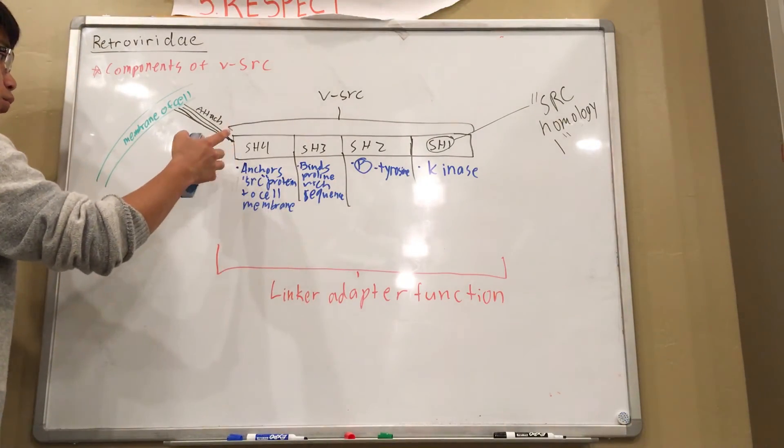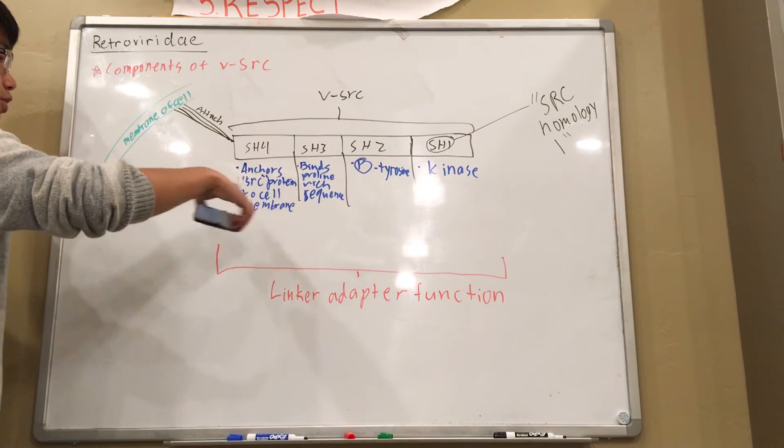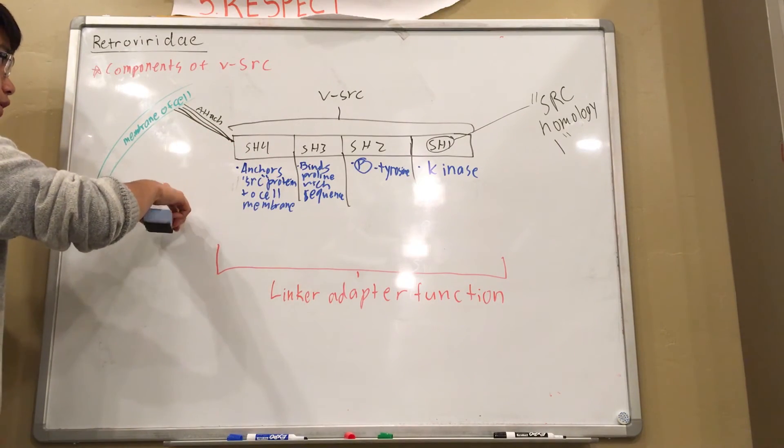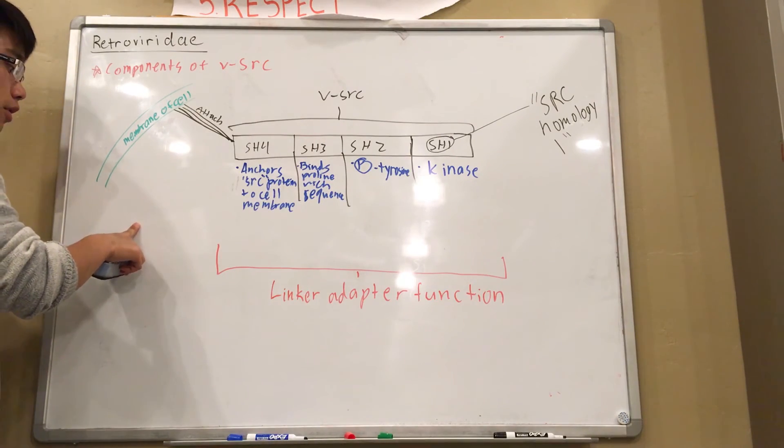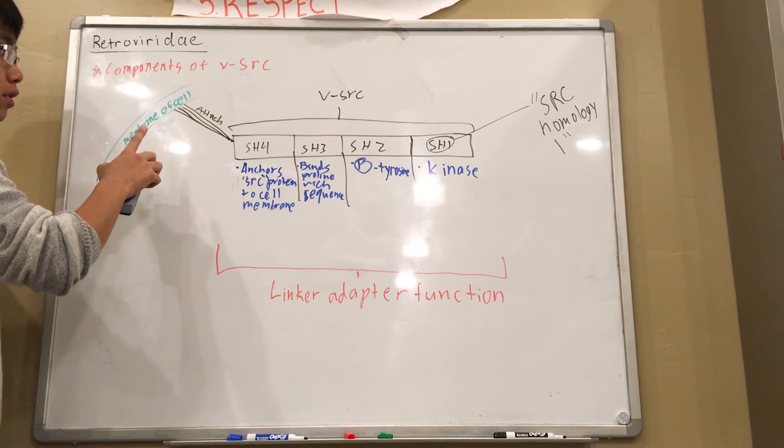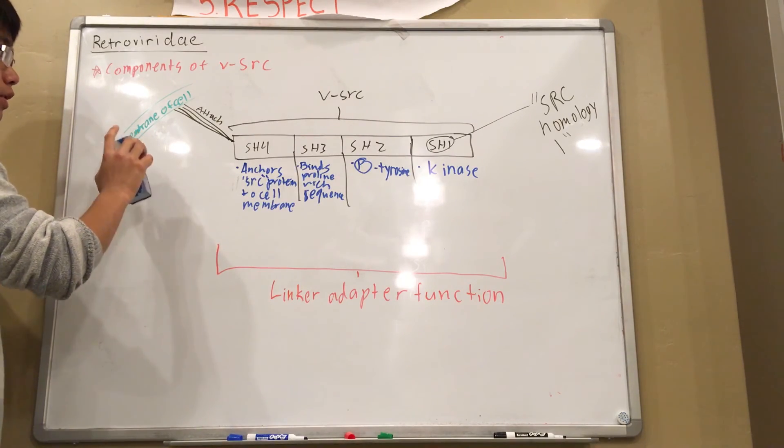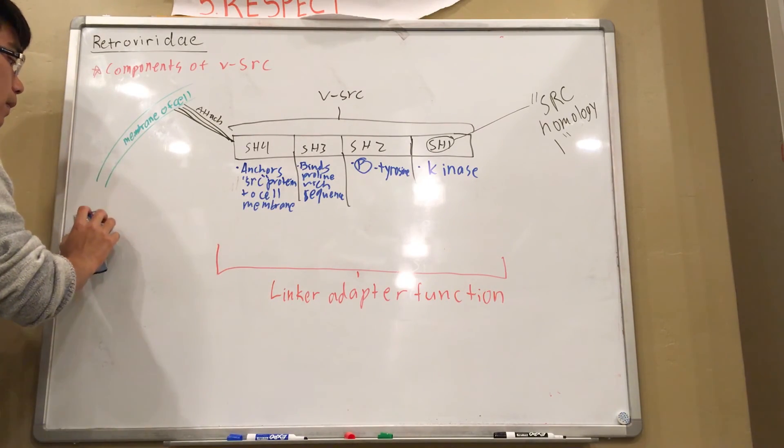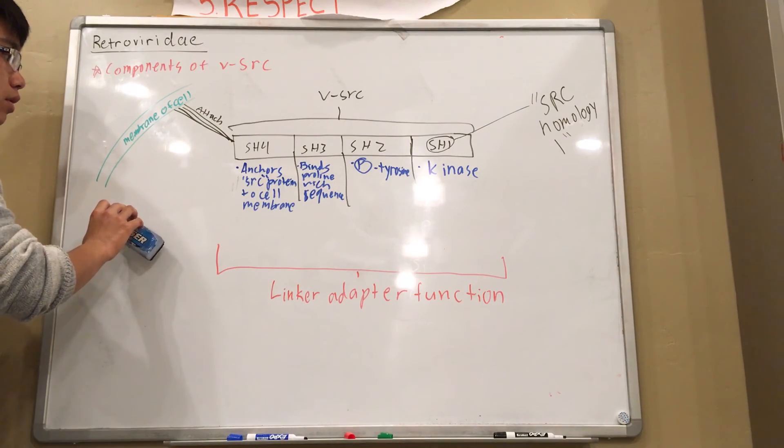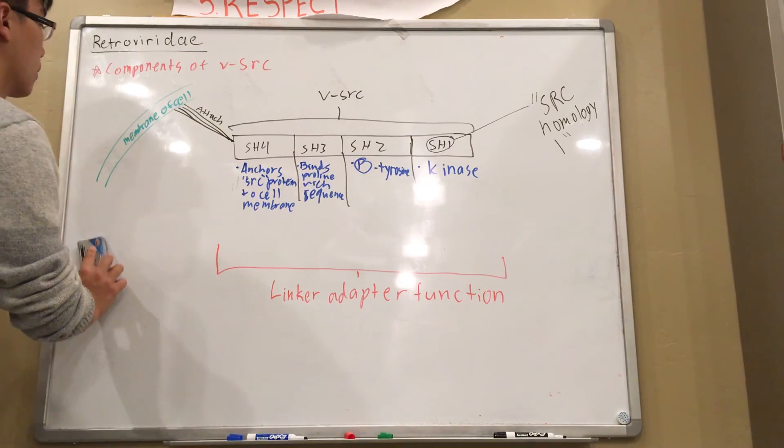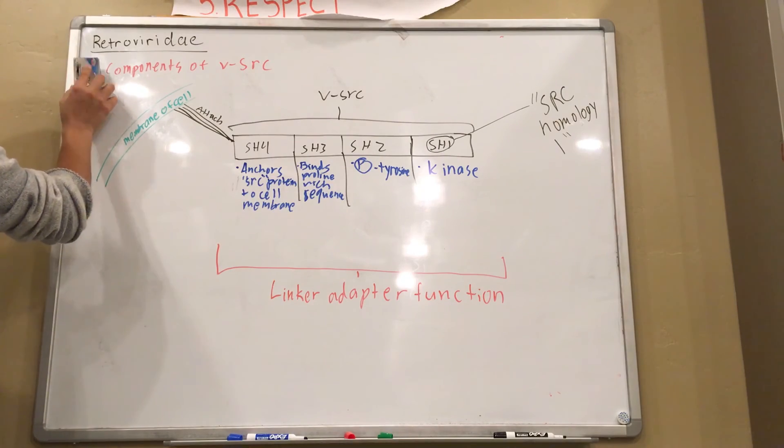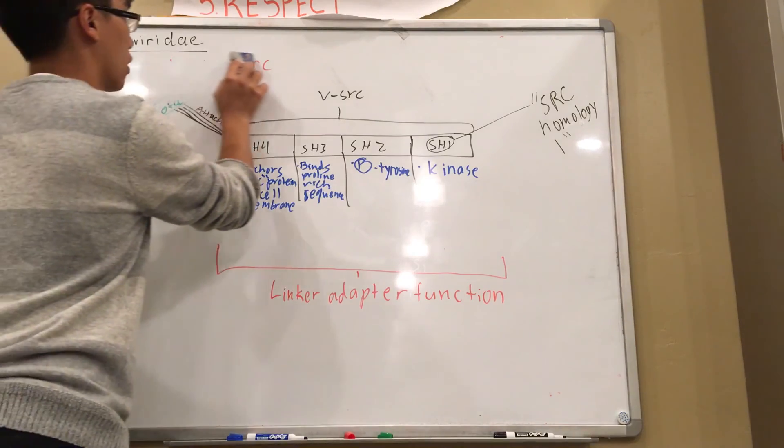So again, I drew this whole picture to show the components of v-SARC. What does v-SARC do? It's a viral homolog of c-SARC. It basically tells the cell to grow, and when the cell grows, it replicates its own DNA and the virus's genome, and then also makes viral protein. And viral genome and viral proteins equals more viruses.